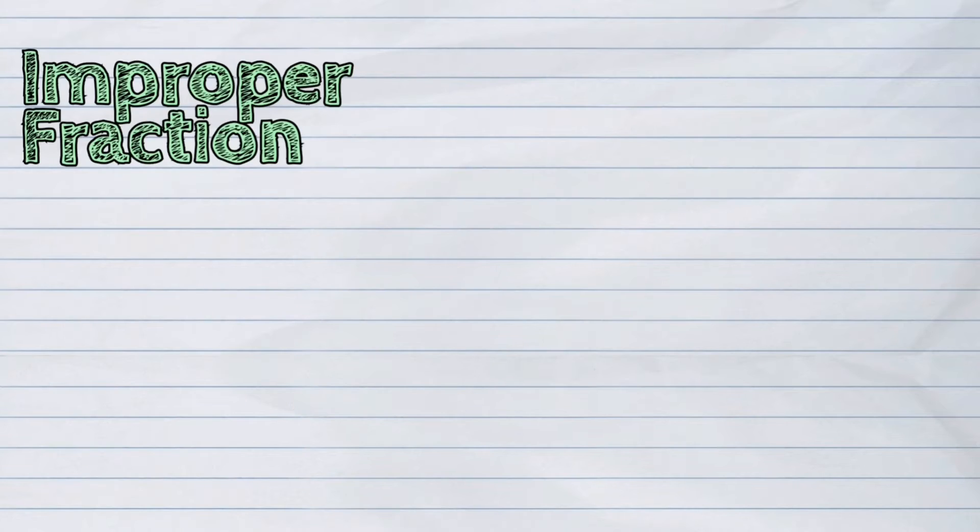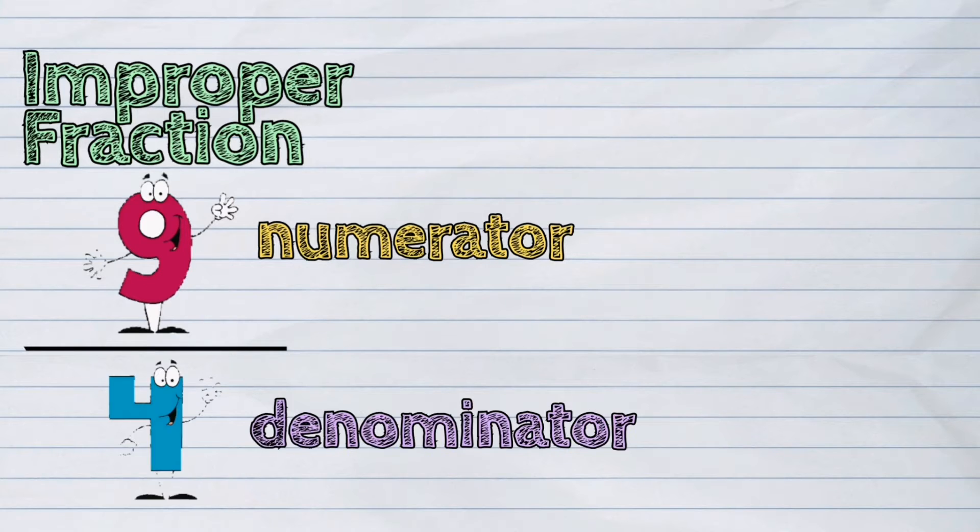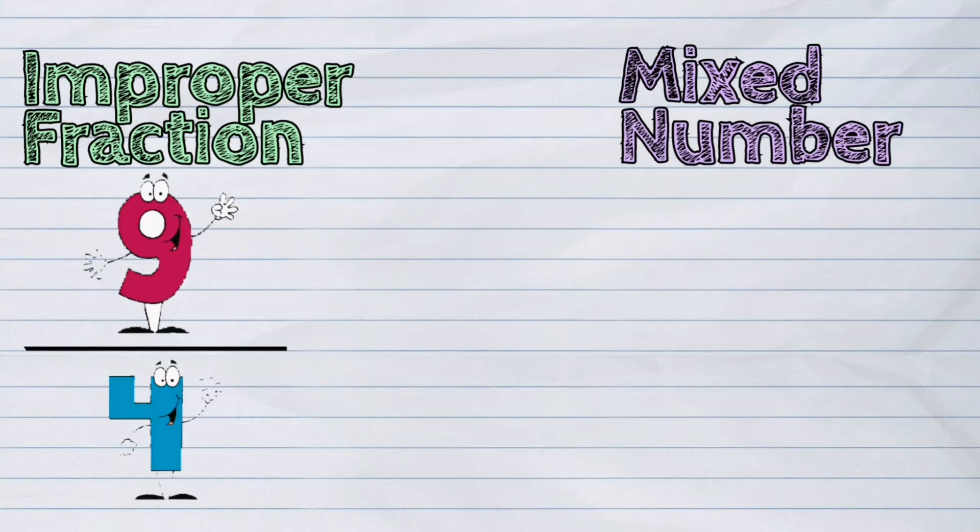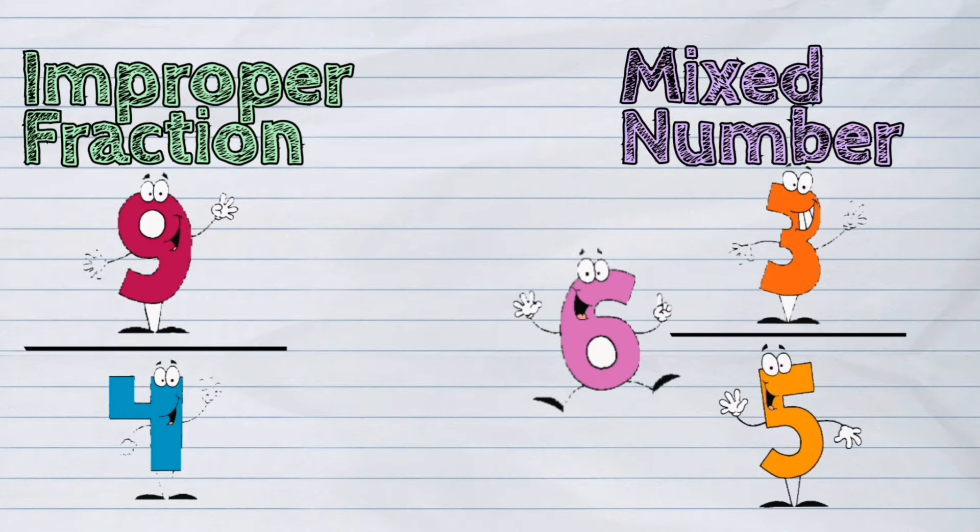An improper fraction is a fraction whose numerator is greater than or equal to its denominator. While a mixed number is formed by a whole number and a proper fraction.